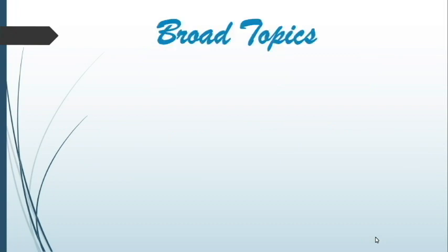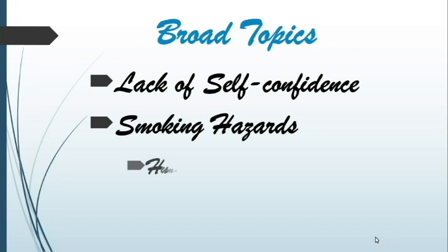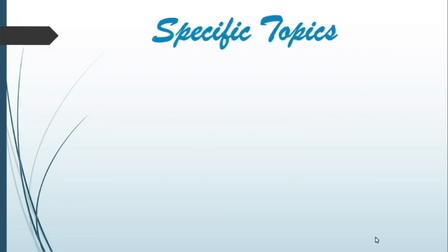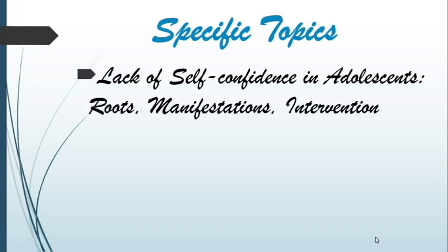These are examples of broad topics: lack of self-confidence, smoking hazards, and human immunodeficiency virus or HIV. We will now see the specified equivalents of these three broad topics. The lack of confidence is specified by adding and stating the scope, the roots, the manifestation, and the interventions.